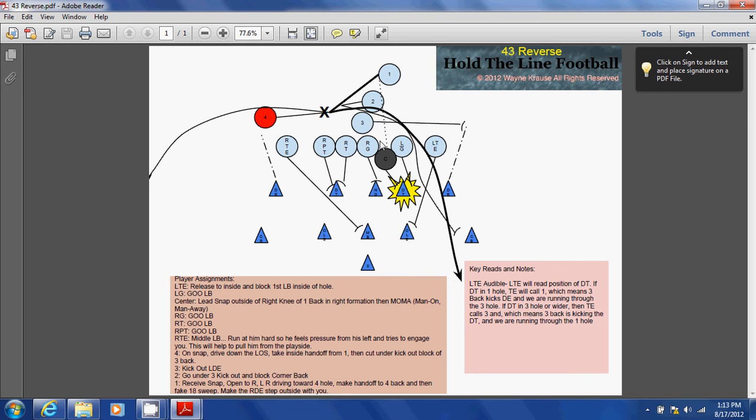So in this formation here, the left tight end will look down to his inside for the first defensive lineman on the line of scrimmage inside of him. In this case, it's the D-tackle here highlighted by the yellow, and this D-tackle is lined up inside of this left guard, just to the inside of him.